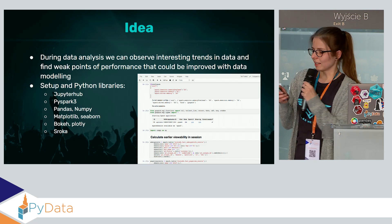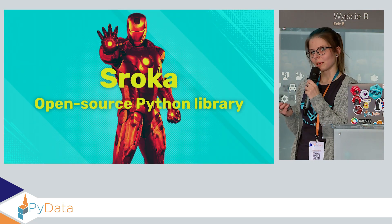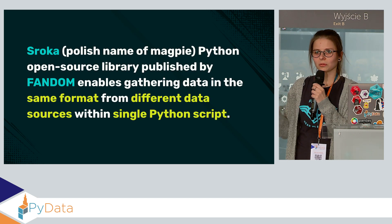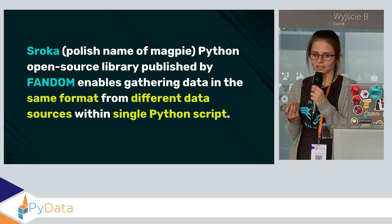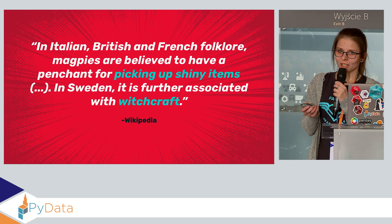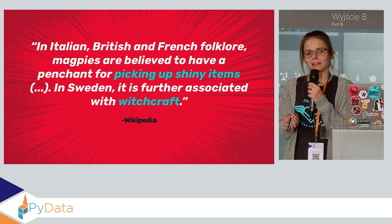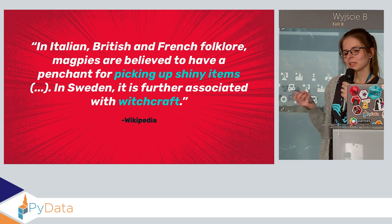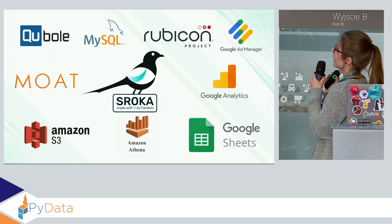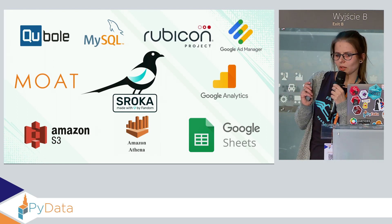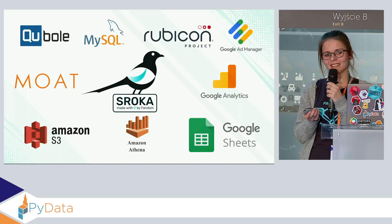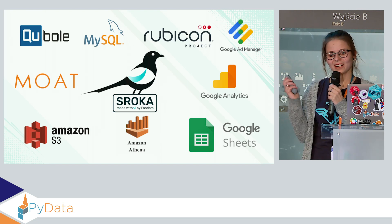Last but not least, we use Stroka — this is our first advertisement. Stroka is our open source Python library that we developed at Fandom. It takes data from different data sources in a really simple way: you have a single function to gather the data, and it returns data in the same format — in our case, a Pandas DataFrame. Why Stroka? Because a Stroka is believed to pick up shiny things, and we believe data is shiny. Currently Stroka can connect to nine data sources, and another one on the way is Neo4j. It's open source, so if you want to contribute or add other data sources, just contact us or create a pull request.